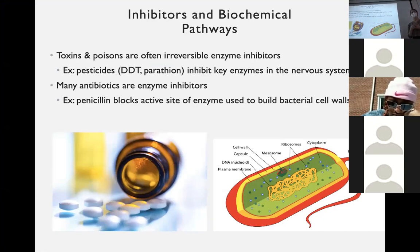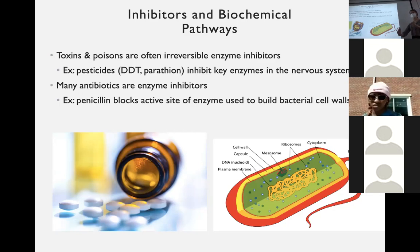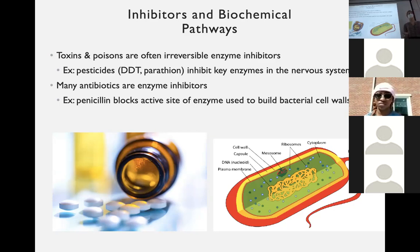If you've heard of DDT, we don't use it in the U.S. anymore because it actually affected human enzymatic reactions as well, so it harmed humans. Ideally, these inhibitors just act on the specific organism we want to kill, say a cockroach or something like that. These inhibitors — toxins and poisons — will basically keep enzymes from working in the organisms' bodies that we want to get rid of.